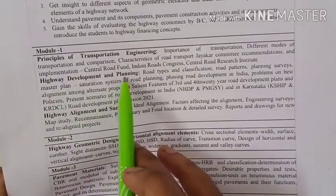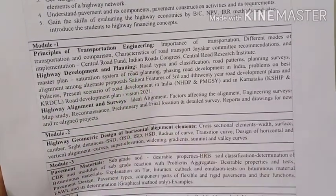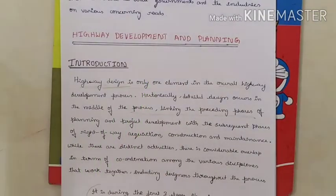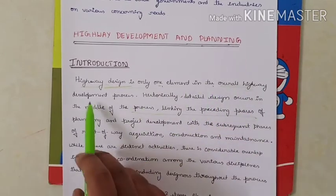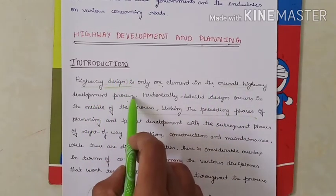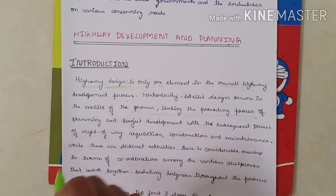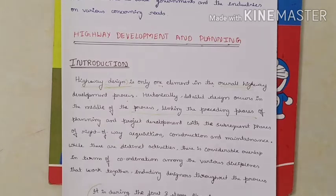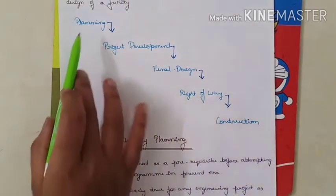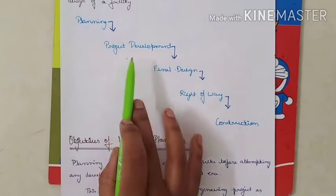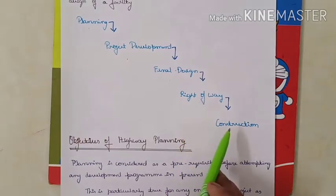Next, we will see highway development and planning. Highway design is only one element in the overall highway development process. The planning stages are: planning, project development, final design, right of way, and construction. During the first three stages — planning, project development, and design — designers and the committee working together can have a greater impact on the final design.